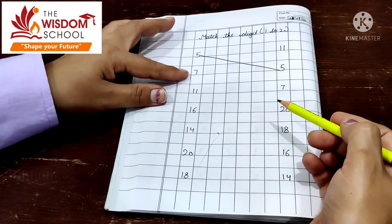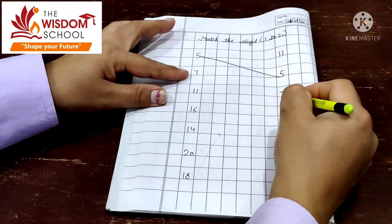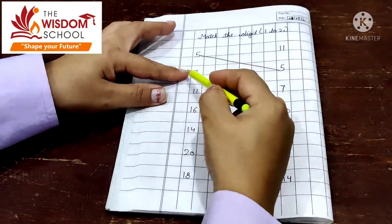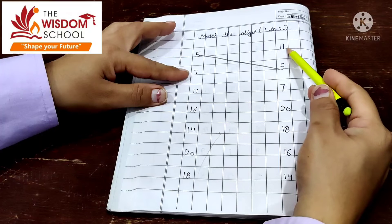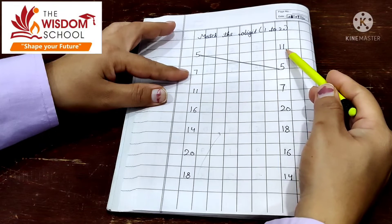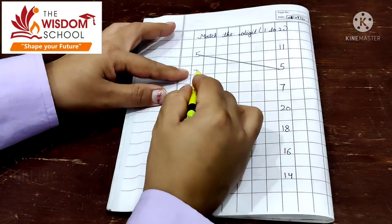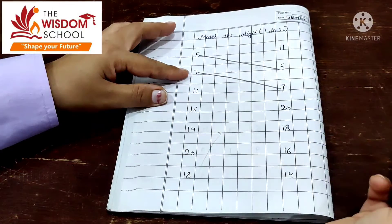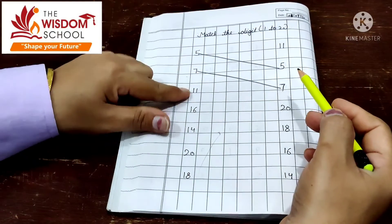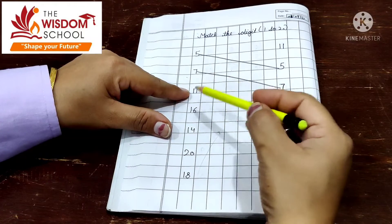Next is number 7. Either you use your finger or you start here. What is number 7? No. What is number 7? Yes. So you have to match this number 7.